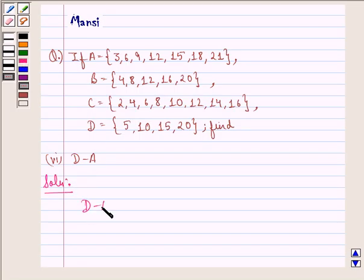We see that D minus A is the set 5, 10, 20. This is also our answer to this question.